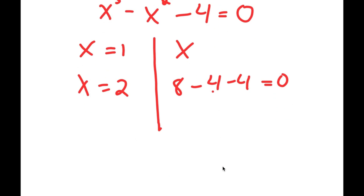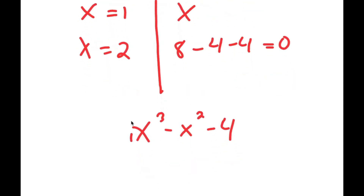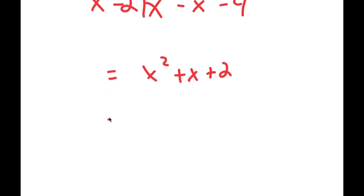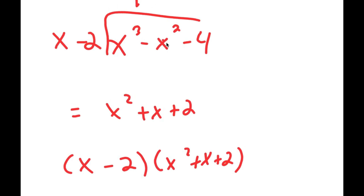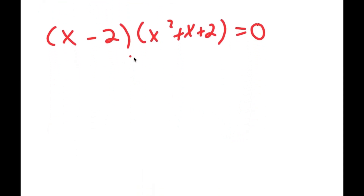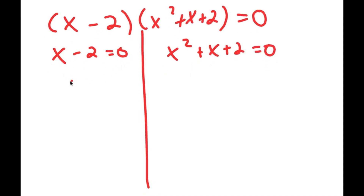Using x equals 2, I can divide the polynomial. So I have x to the power of 3 minus x squared minus 4 divided by x minus 2, and this results in x squared plus x plus 2. So I get x minus 2 times x squared plus x plus 2 is equal to x to the power of 3 minus x squared minus 4, and that's equal to 0. So I get two equations: x minus 2 equals 0, and x squared plus x plus 2 equals 0. For x minus 2 equals 0, x is obviously equal to 2.